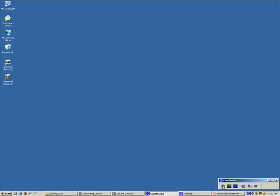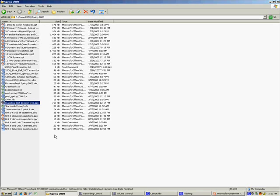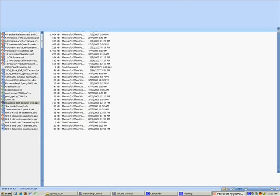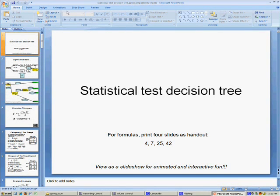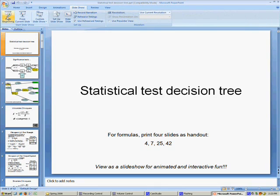Hi, my name is Jeff Kotz and I'd like to welcome you to today's lecture on how to calculate a bivariate chi-square. In order to get started, we need to open the Statistical Test Decision Tree PowerPoint file. I already have that open. And why don't we just go ahead and get started.